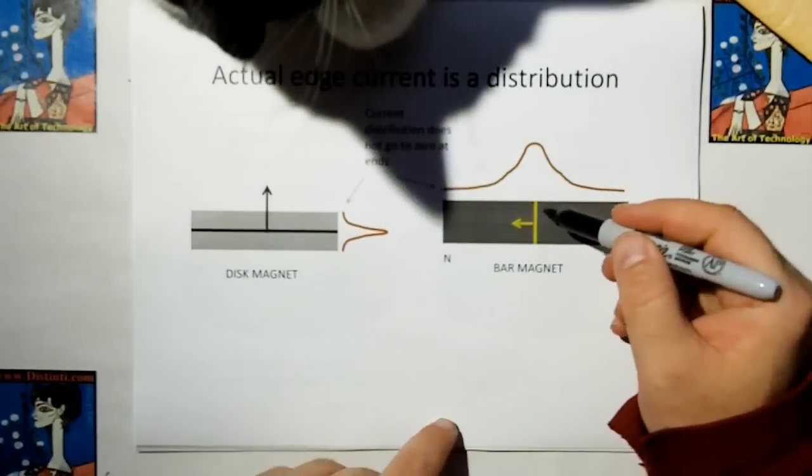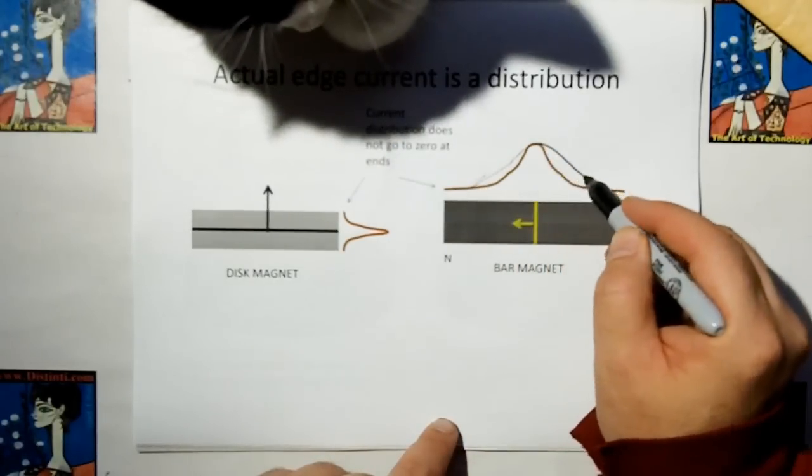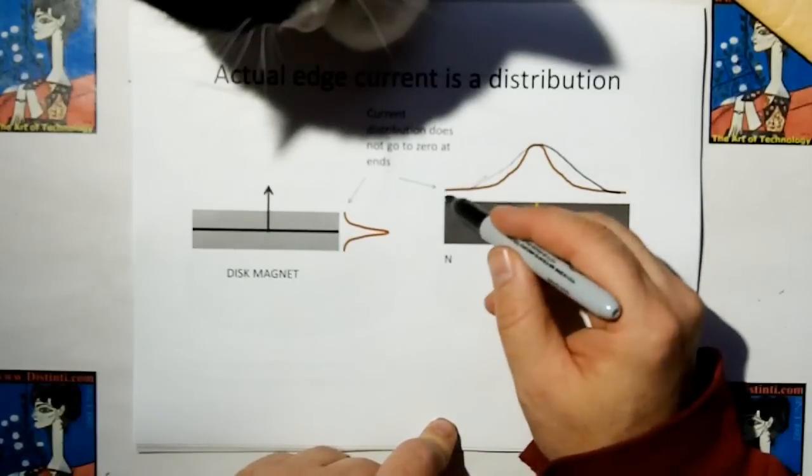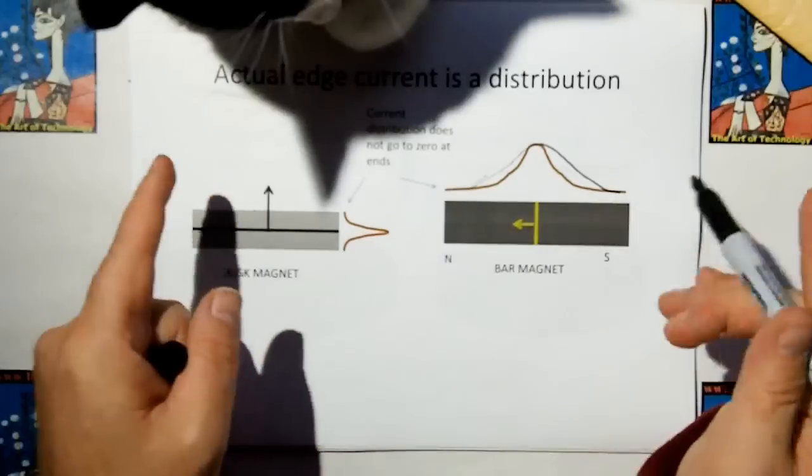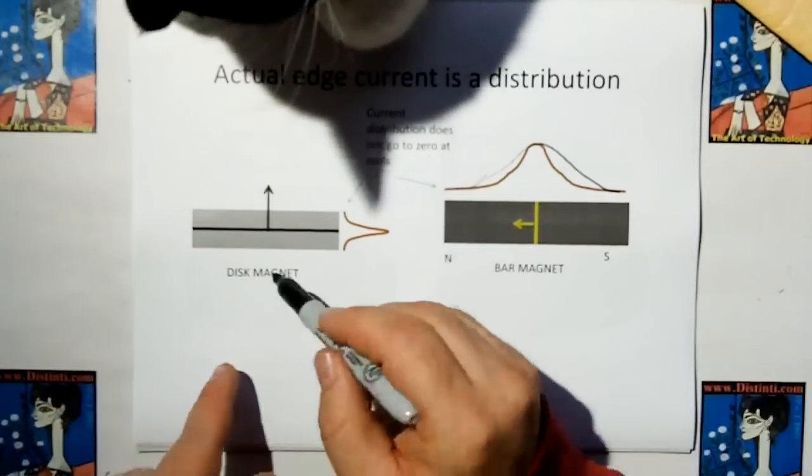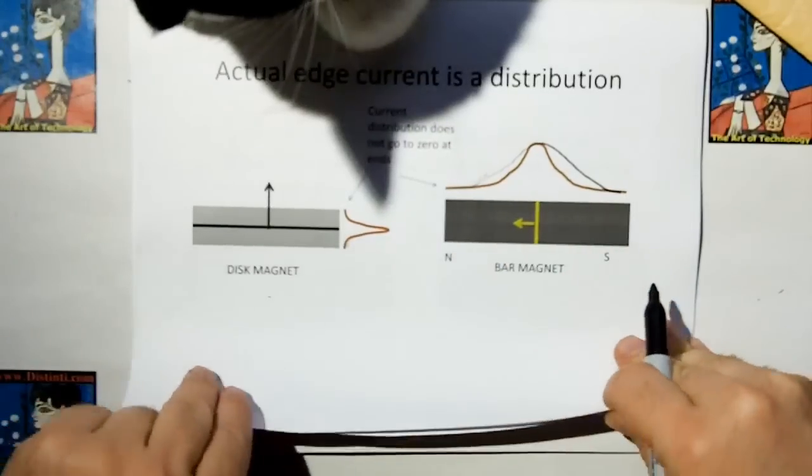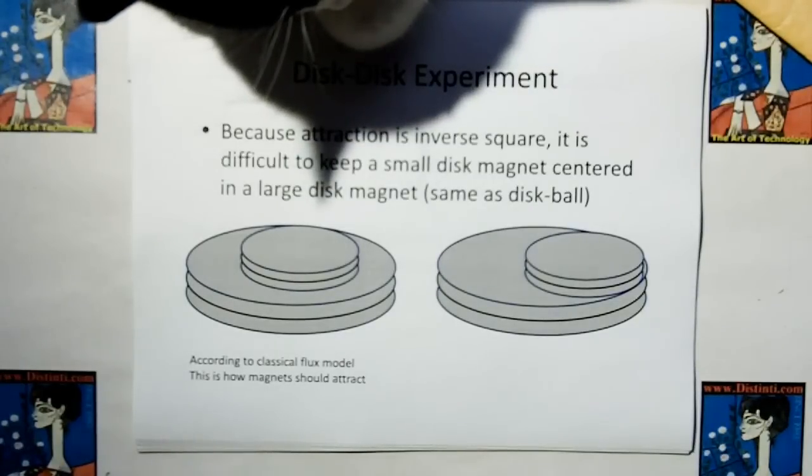But just be careful, because the actual edge current is a distribution. For a bar magnet anyway, it's a distribution. It may not look exactly like this. It may look something more like this. Not 100% sure. But it's not zero at the edges. And the longer the magnet is, and this is a disc magnet, that's because it's a very narrow edge current.